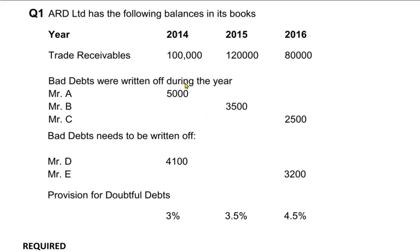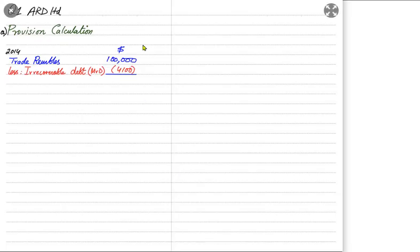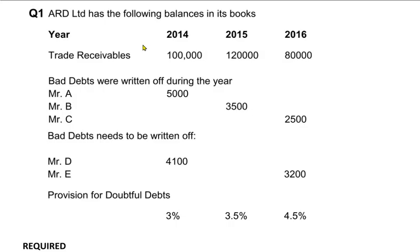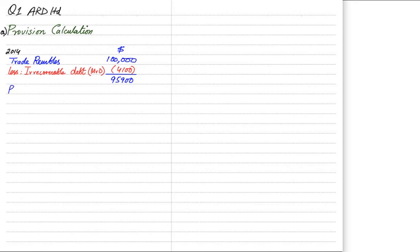The 100,000 is the amount after deducting Mr. A's debt — it would actually have been 105,000 and after deducting Mr. A we are left with 100,000. Then we deduct Mr. D as well, that is 4,100. The amount we are left with is 95,900 — this means customers still owe us 95,900. Will we collect 100% of 95,900? No, because there is a doubt that three percent of customers will not pay. Applying three percent to 95,900 gives 2,877.